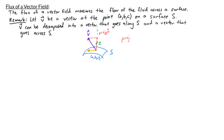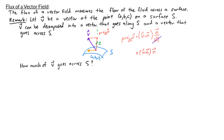Recall that the projection of v onto n is given by v dot n times n divided by its magnitude. Since n is the unit normal vector, its magnitude is 1, so the projection simplifies to v dot n times the vector n. If we ask how much of v goes across the surface S, we take the magnitude of this projection, which gives v dot n times the magnitude of n. Since n is a unit vector the magnitude is 1, leaving us with v dot n. So the amount of v that goes across S is simply v dot n.